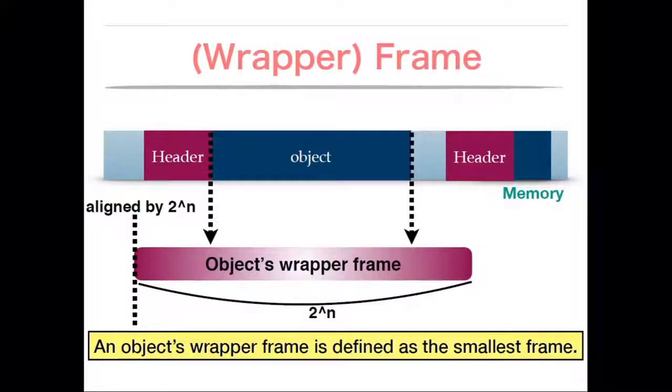To do that, we introduce frame. Frame is defined as a memory block that is 2 to n size and aligned by its size. Using this feature, we calculate the address. For each object, we get the object wrapper frame, which is defined as the smallest frame having the object inside and is also aligned by 2 to n and its size is 2 to n. So there exists only one wrapper frame for each object.